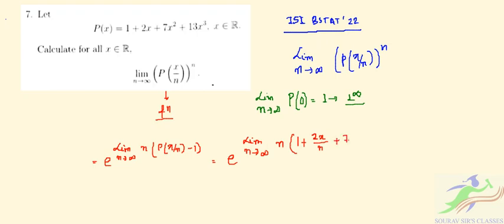Plus 7(x/n)² + 13(x/n)³]. If we do this, there is n. If you multiply by this, out of this it will be minus 1.